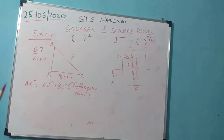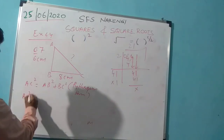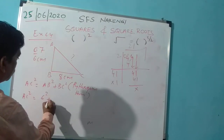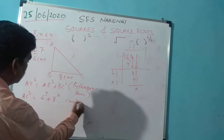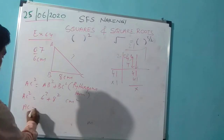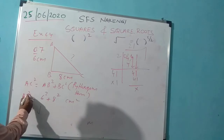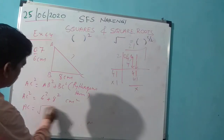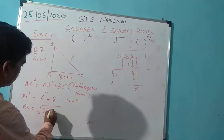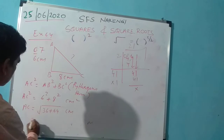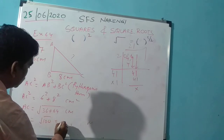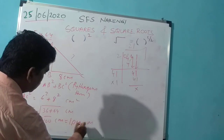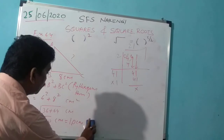So AC² = AB² + BC². Substituting: AC² = 6² + 8² = 36 + 64 = 100 cm². Therefore AC = √100 = 10 cm. So 10 centimeters is the answer for AC.